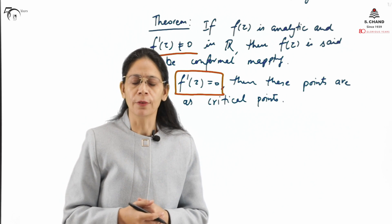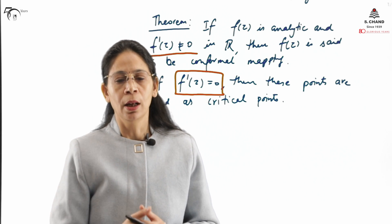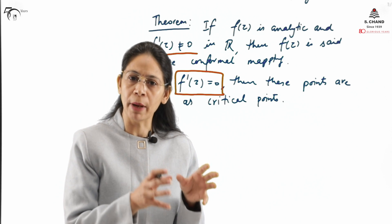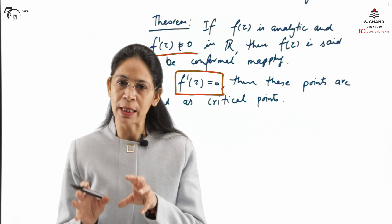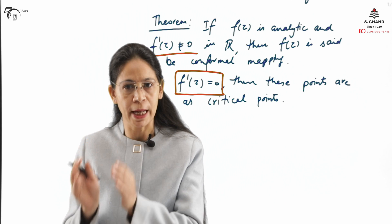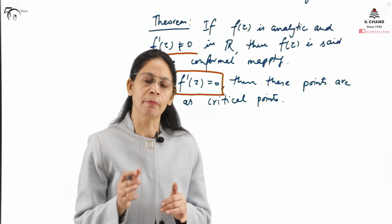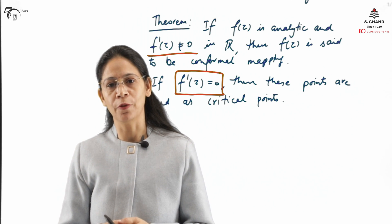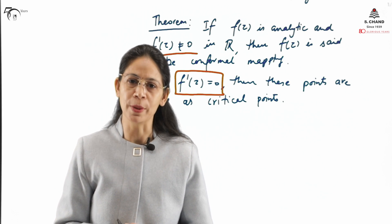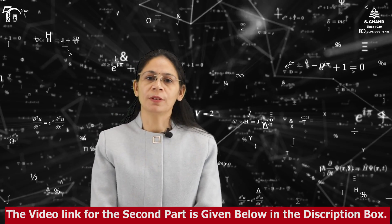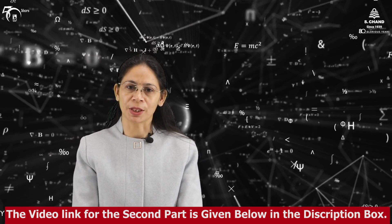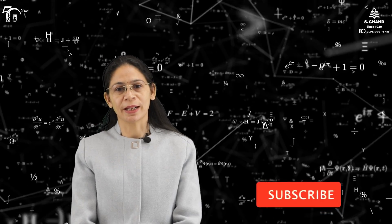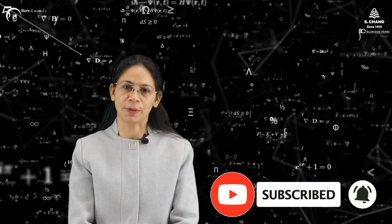This is all about conformal mapping. In this part of the video we have learned what we mean by transformation, how a complex transformation transforms the xy plane to the uv plane, and when a mapping is said to be conformal. In the next part we will take one example for conformal mapping and then move to the next topic — Möbius transformation. For in-depth knowledge you can refer to the book from S.Chan Publishing; the link is given in the description box. Please like, share, and subscribe, and press the bell icon for notifications.